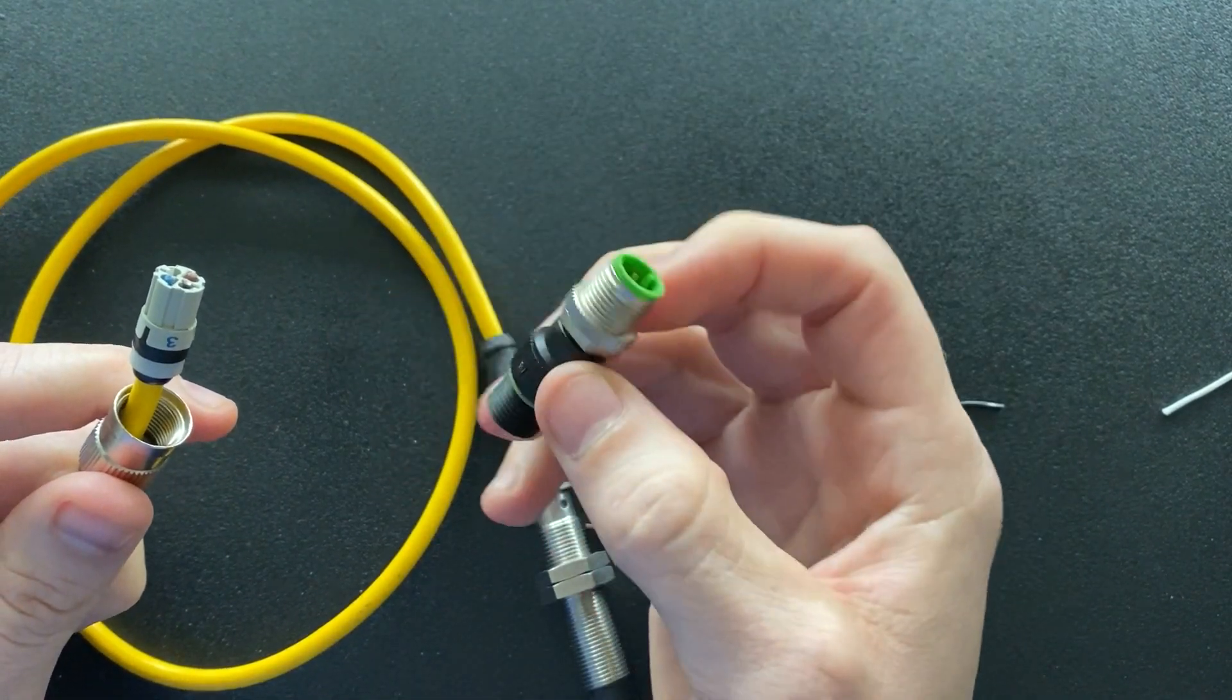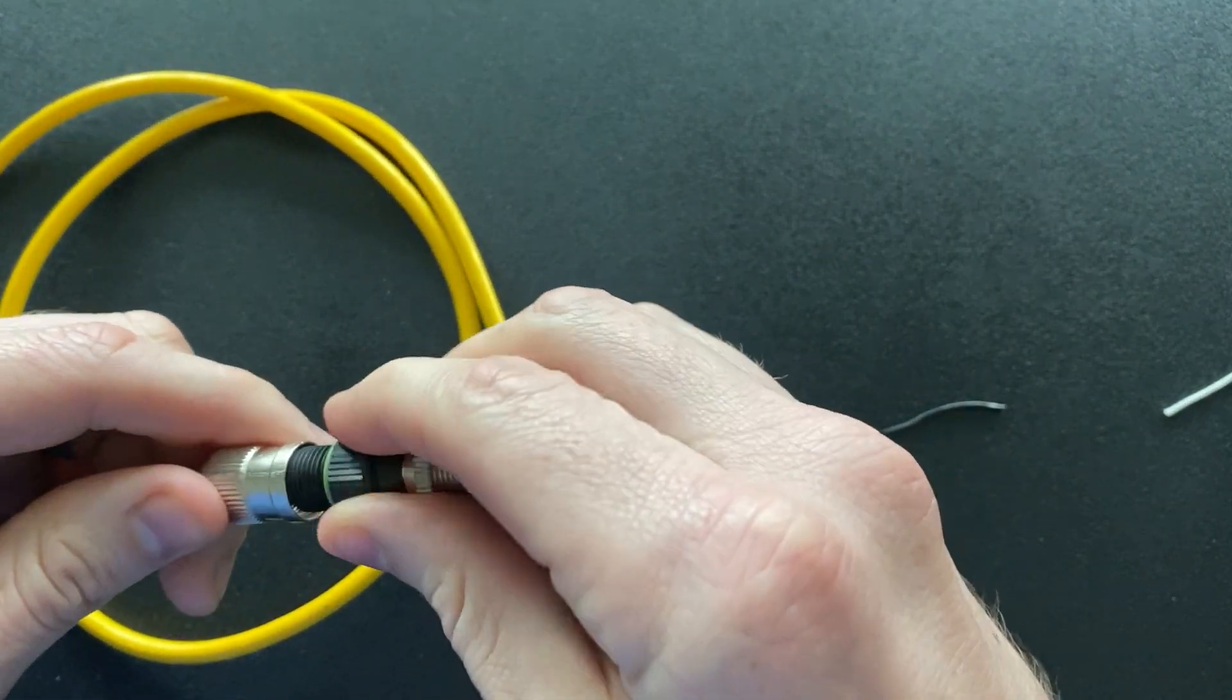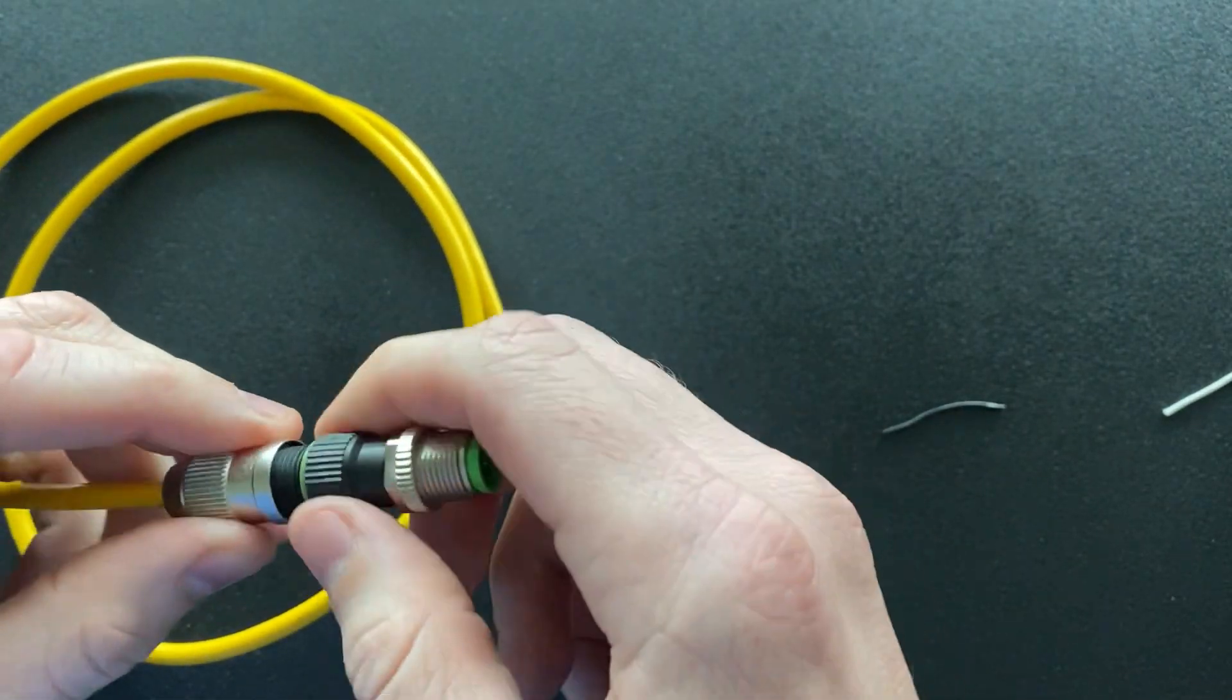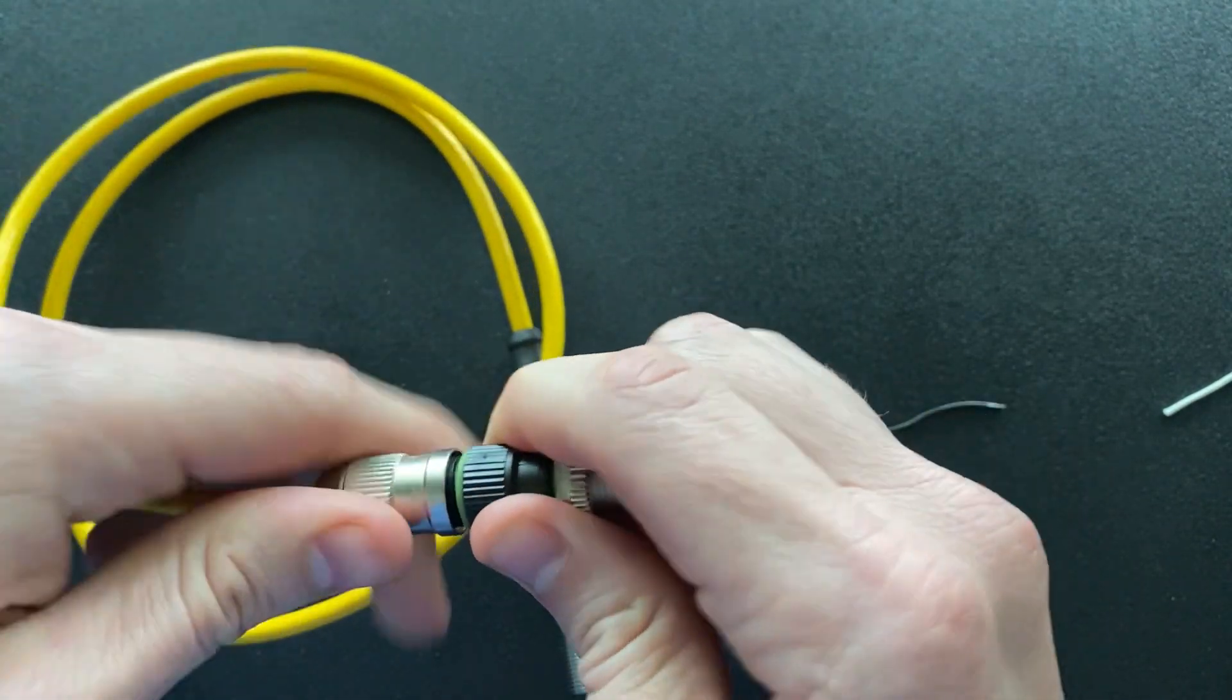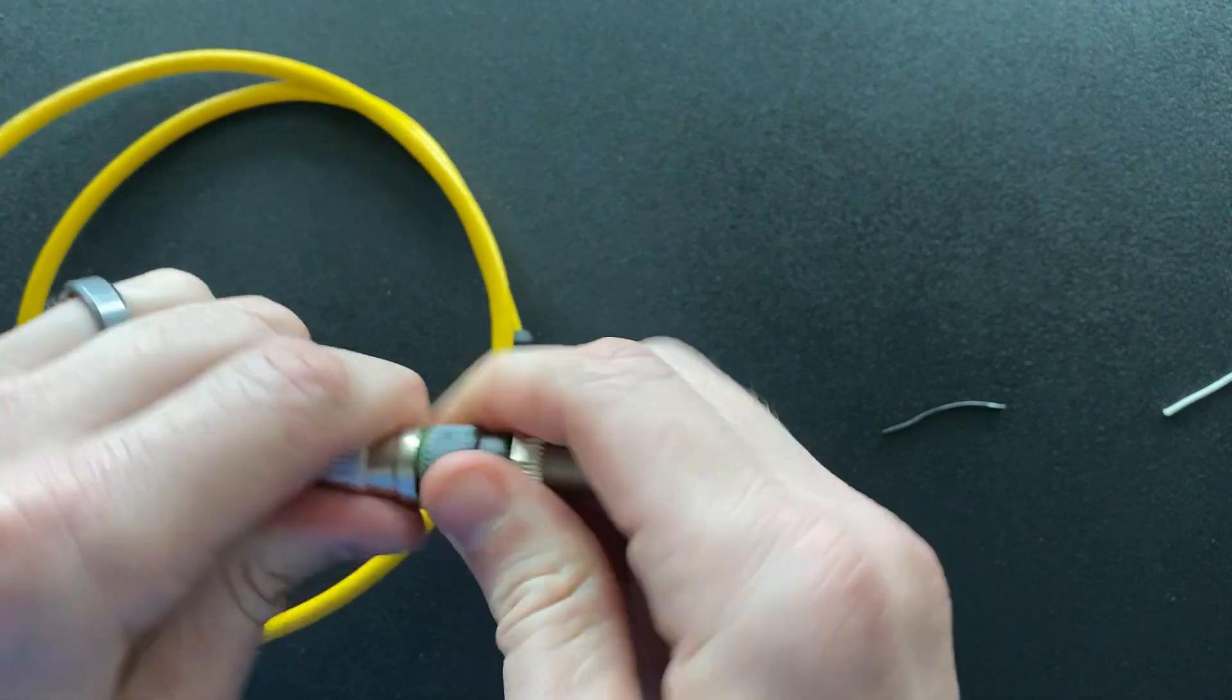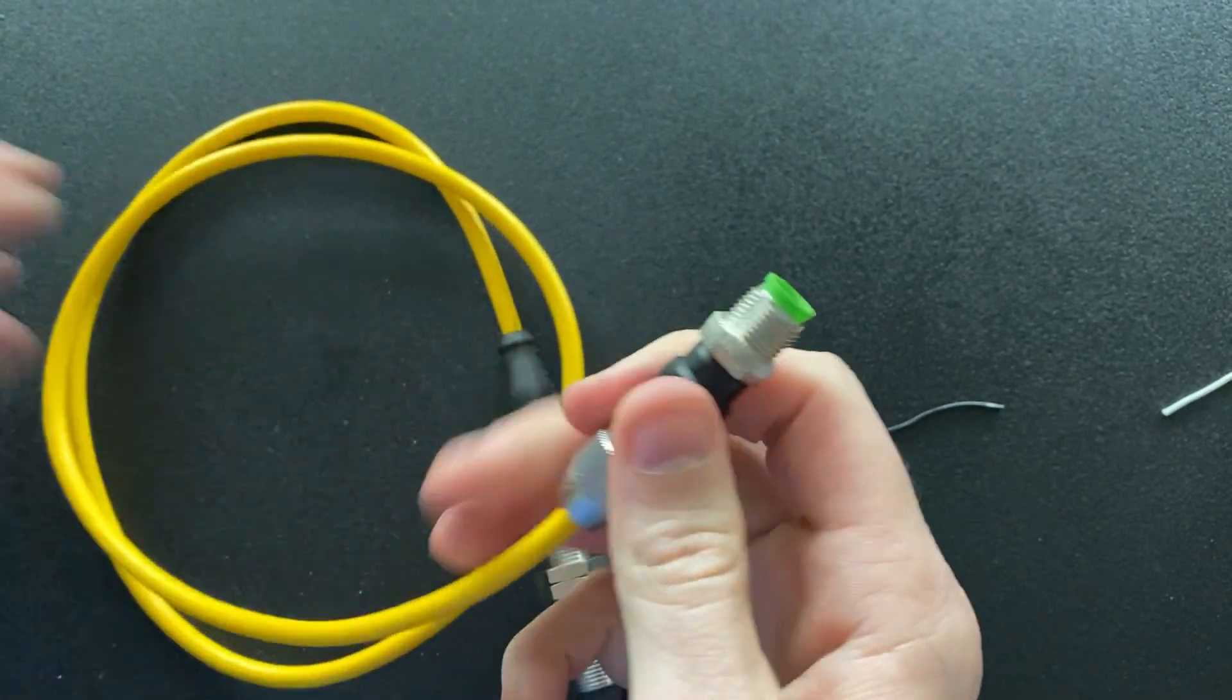From there, you just take this connector termination and thread it over the top with the sealing nut. It lines up until that's snug. Make sure that seal is tight.